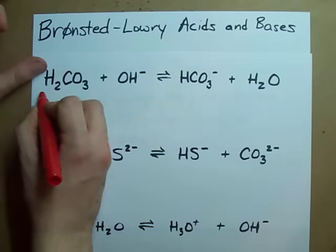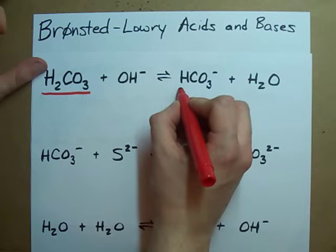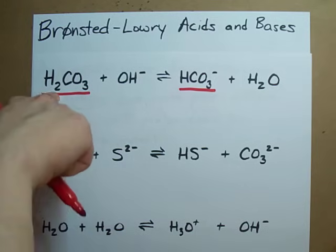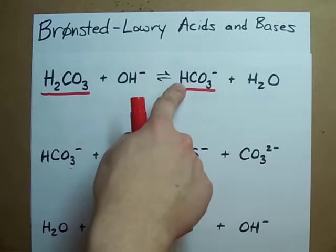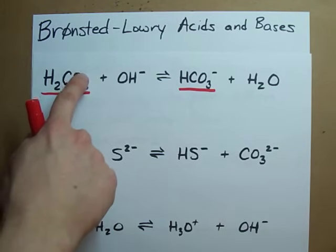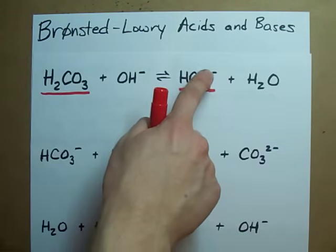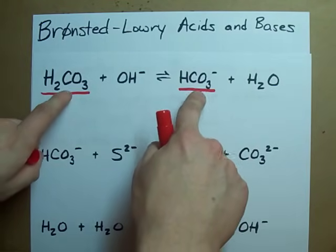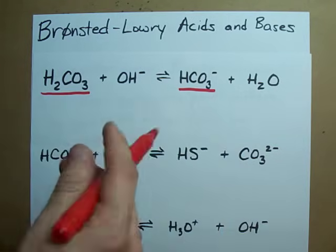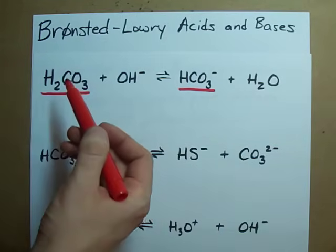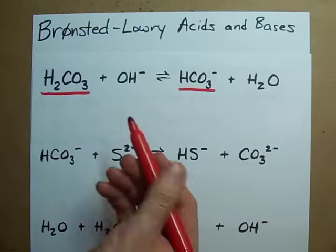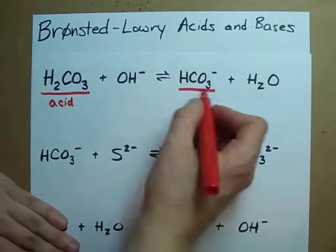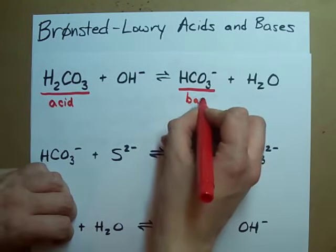Take a look at this chemical versus this chemical. What's the difference? This one has two H's. This one has one. This one has no charge. This one has a negative charge. They differ by an H and by a single charge. That means it lost an H+ to get there. This is the acid in this acid-base pair. And this is the base.